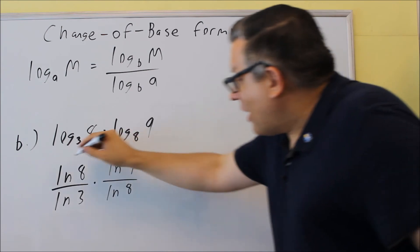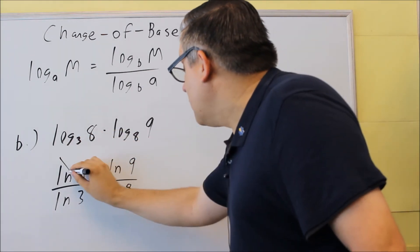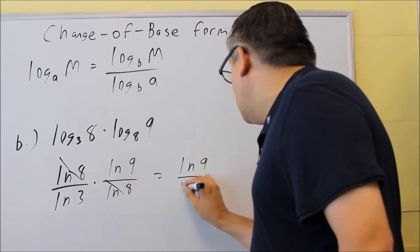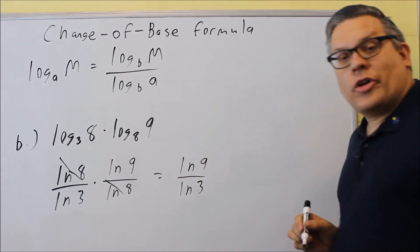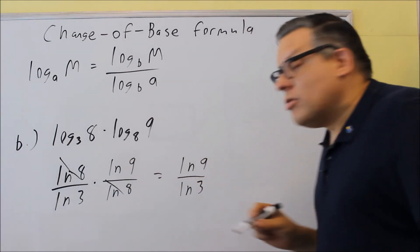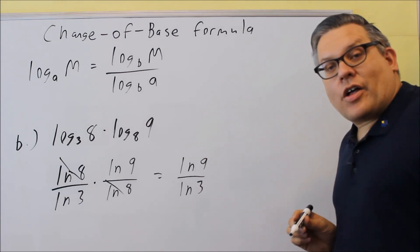Now for this one, I can actually just cancel out the two LN 8s and make it LN 9 divided by LN 3. Because of multiplication, I am allowed to cancel those out.